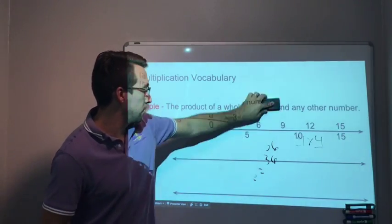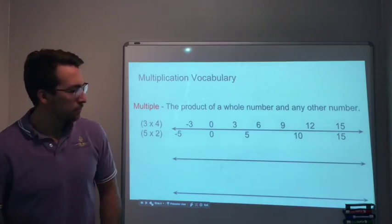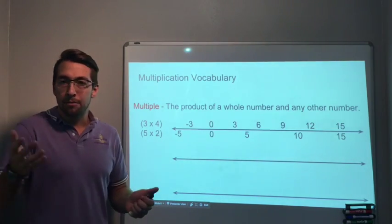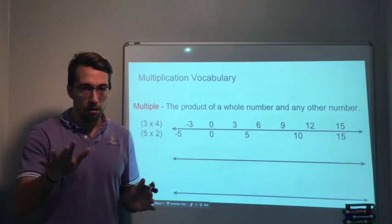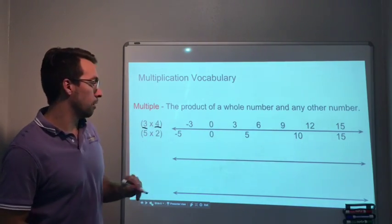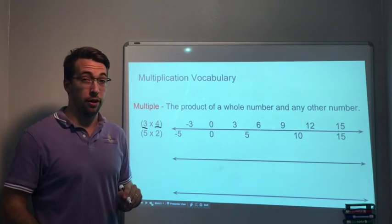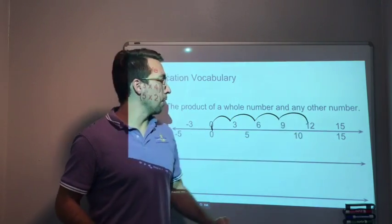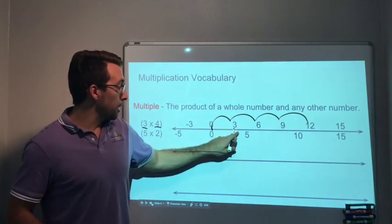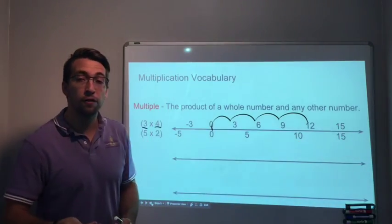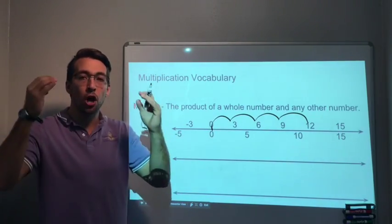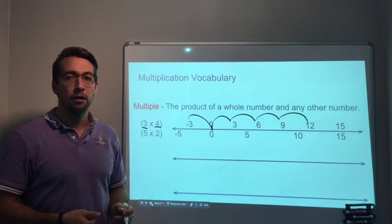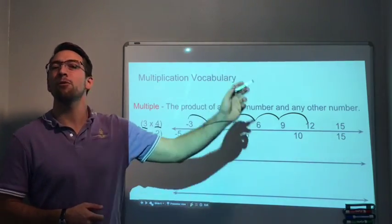And then now we have multiples. What are multiples? Multiples are the product of a whole number and any other number. So if you multiply any number times another number, that's going to be multiples. 3 × 4. So multiples of 3. We can start at 0, 1, 2, 3, 4. 3 × 4 is 12. 3, 6, 9, 12. And we can keep going. Those are all multiples of 3. We can go backwards too. 1 time backwards from 0, negative 3. And if we kept going 15, 18, 21, 24, 27, 30. Multiples go on forever.